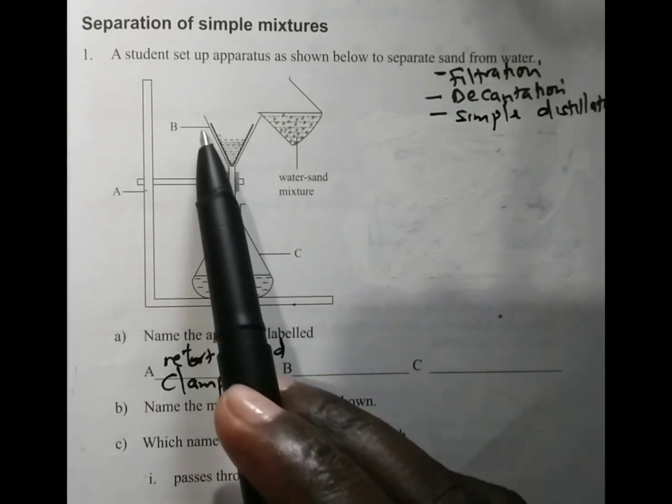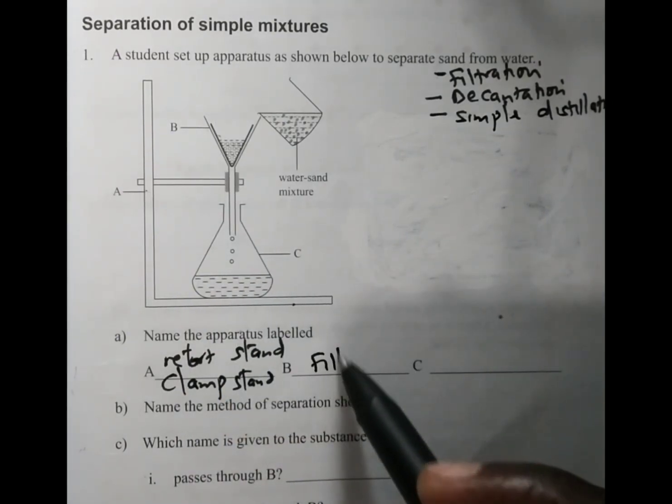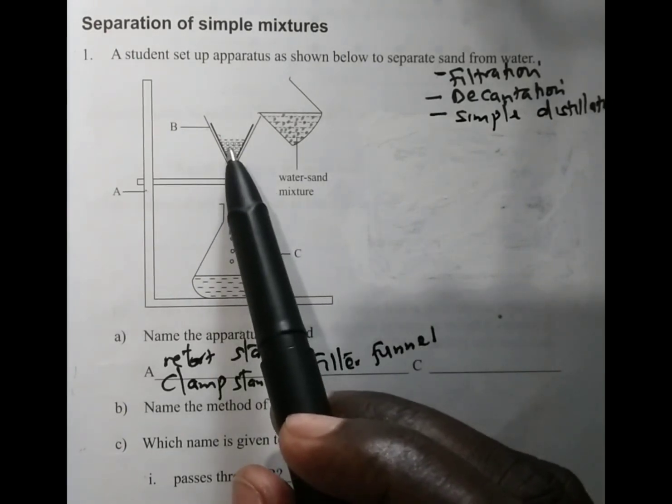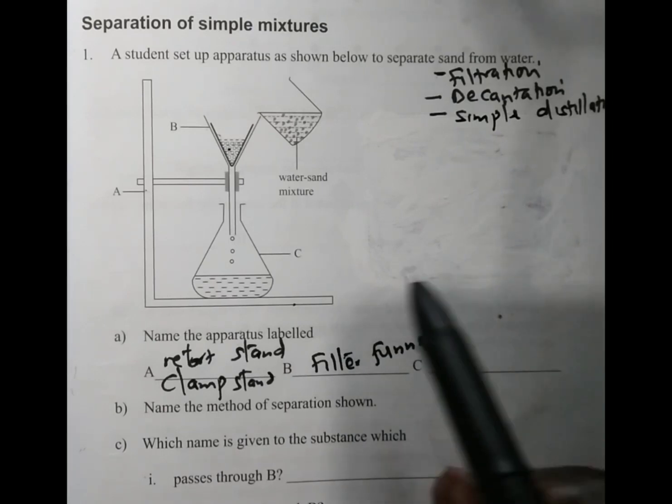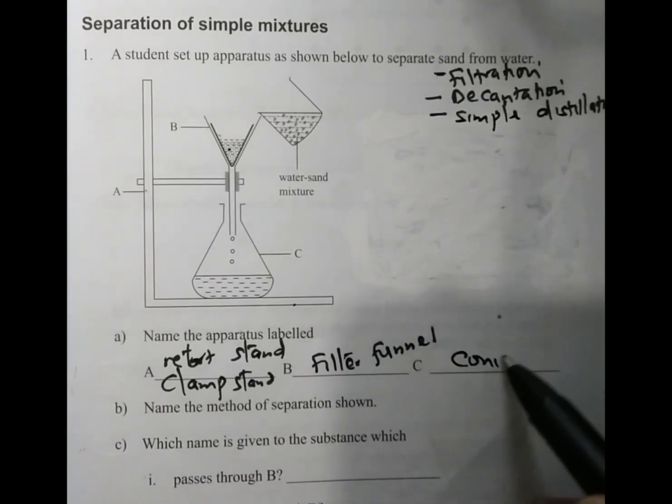B is a filter funnel, but inside the filter funnel we have the filter paper. Then C we call it the conical flask.